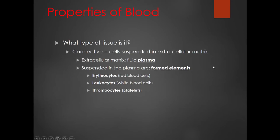Welcome students to exercise 29, which is going to focus on blood — something you will probably become quite familiar with if you go into the healthcare field. I'm going to start with some generic properties, starting with what type of tissue blood actually is. Blood is not an organ; it happens to be a tissue, and the type of tissue it is is a connective tissue. Connective tissues are support tissues, and they all share the feature of having cells suspended in a largely non-living extracellular matrix. The extracellular matrix in blood is what we call plasma.